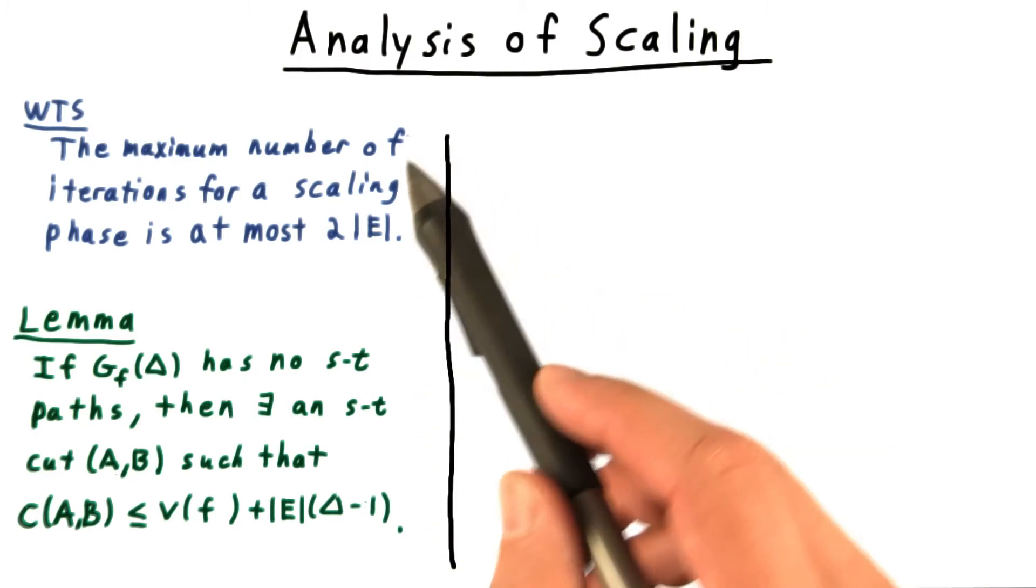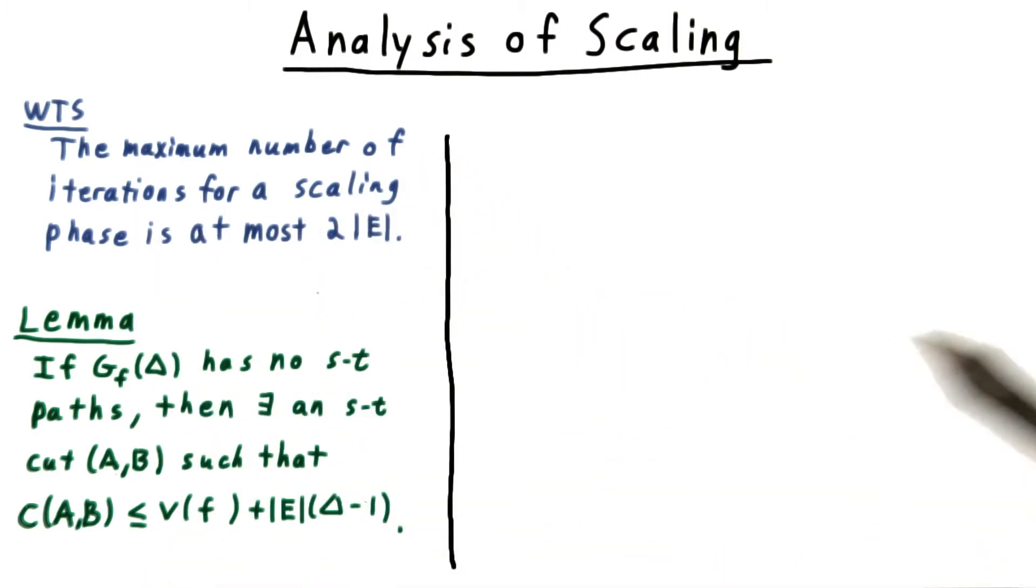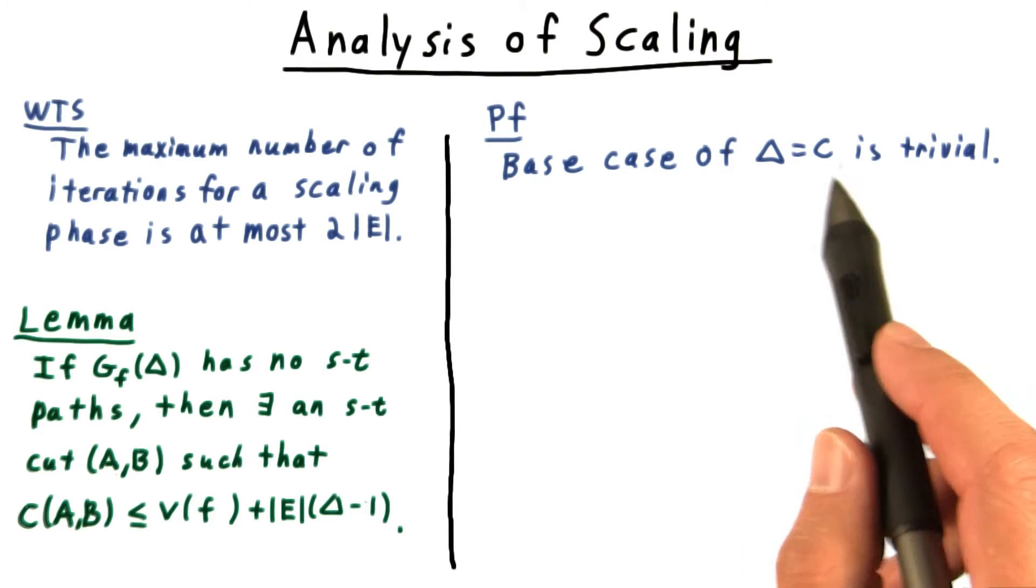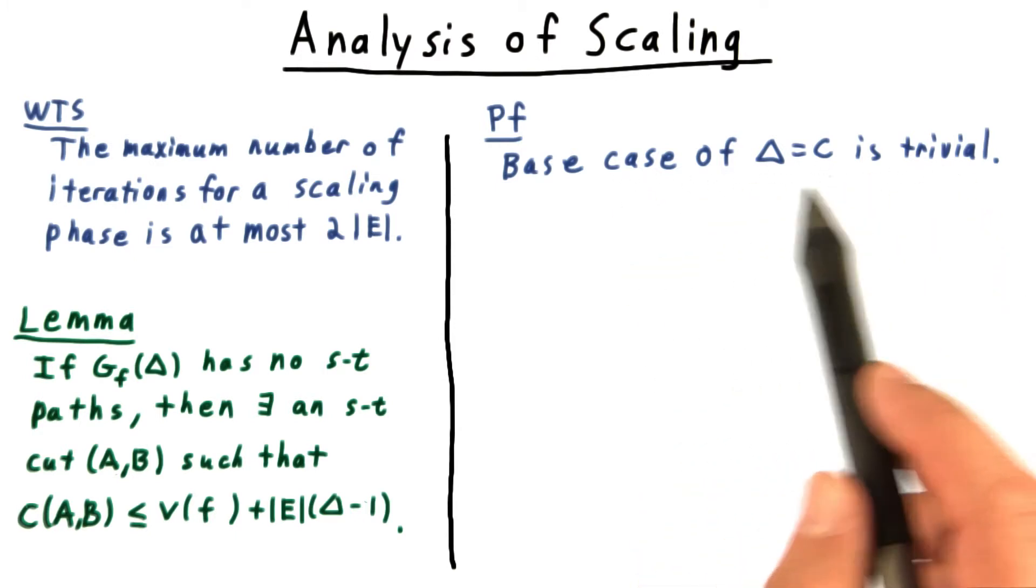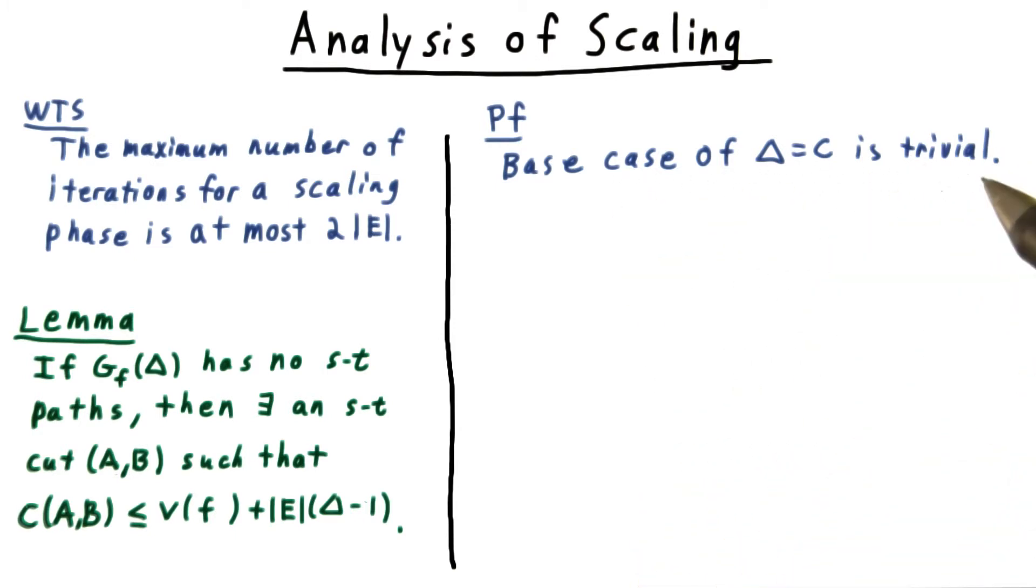With this lemma complete, we now return to the main claim that we want to prove. The base case where delta equals C is trivial, since each augmenting flow here saturates one of the edges out of the source.